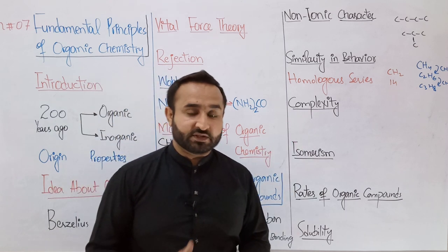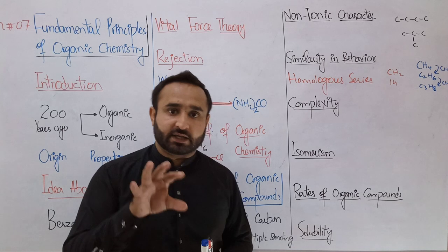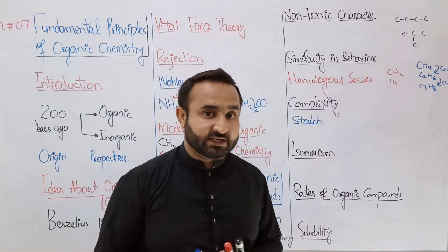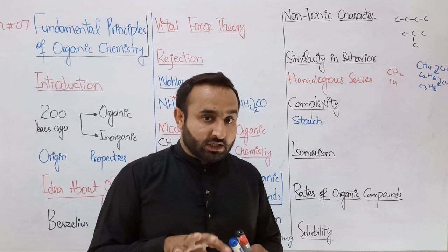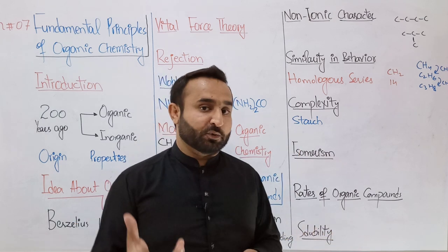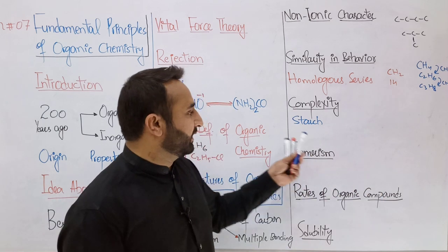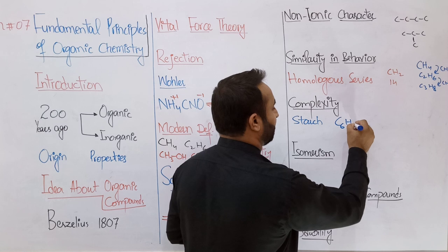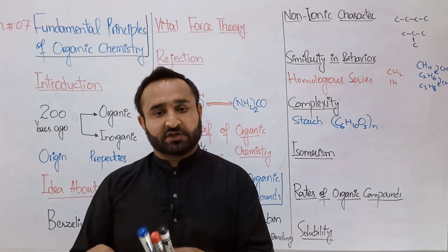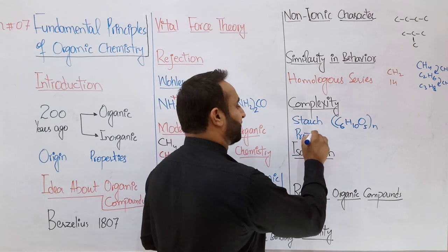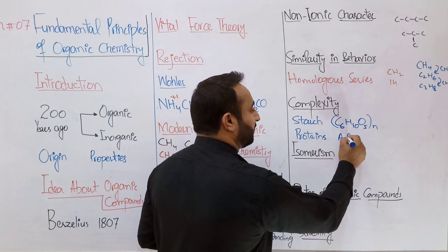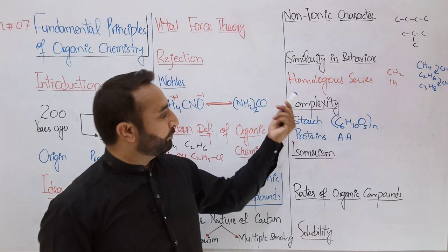Complexity: organic compounds are highly complex while inorganic compounds are simple. For example, starch is a polysaccharide — a polymer. Polymers are made of uncountable repeating units. All available glucose molecules join together to form a large molecule called starch. Its general formula is (C6H10O5)n where n can be in the thousands or millions. Similarly, protein is also a highly complex organic compound — amino acids join together to form proteins.